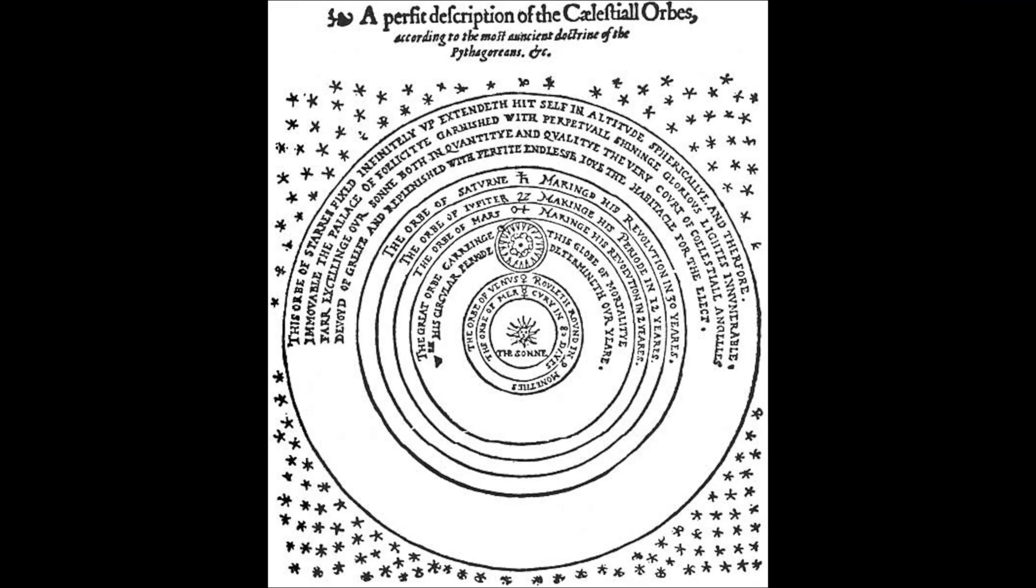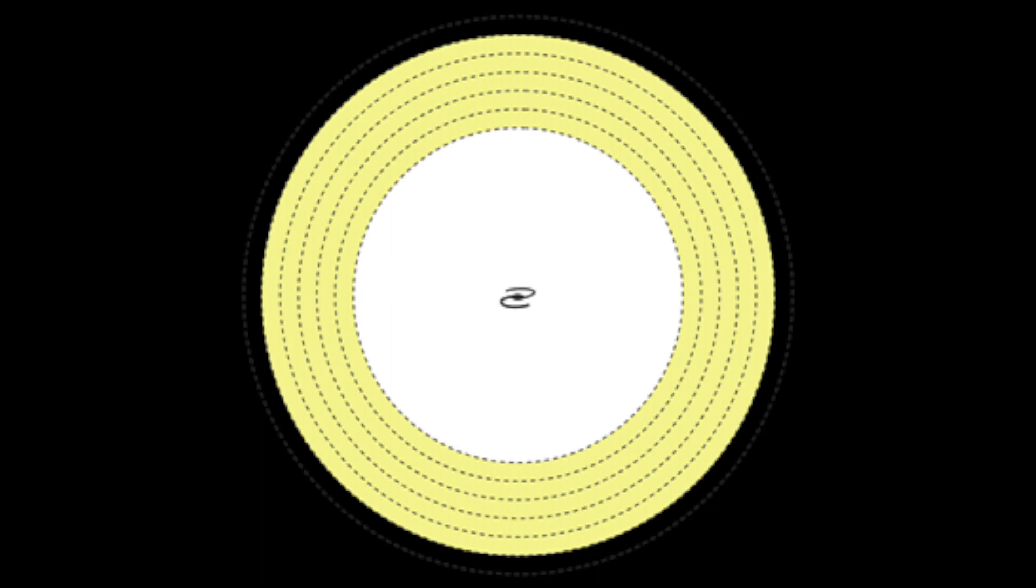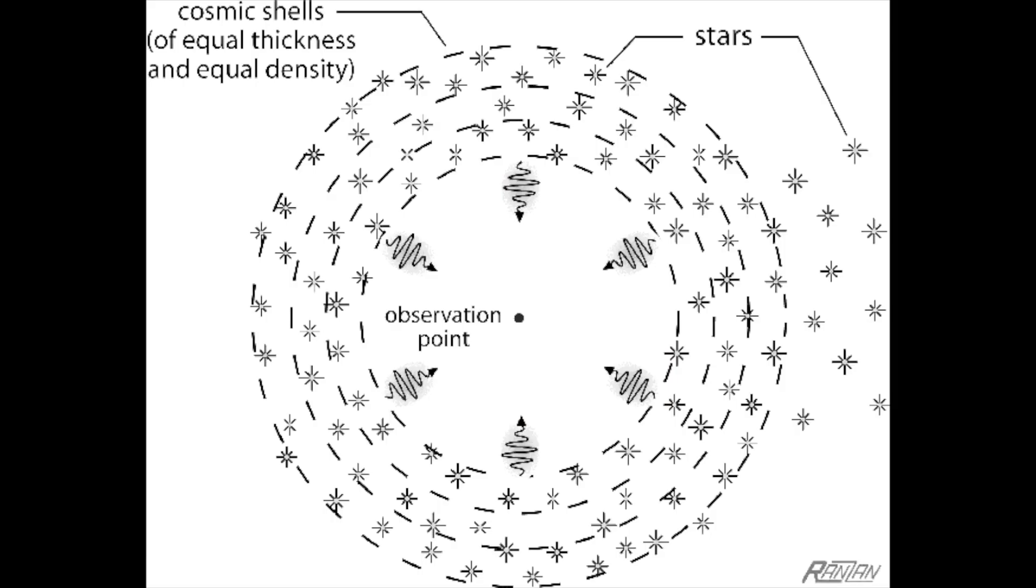Simply because if stars were evenly distributed in the infinite space around us, as traditionally assumed in the past, their overall luminosity should be infinite. To understand this, let's cut the three-dimensional space into an infinity of spherical bubbles of equal thickness, for example one light year, centered on the Earth. The number of stars in each bubble is statistically proportional to the volume, hence to the square of the radius since the thickness is constant.